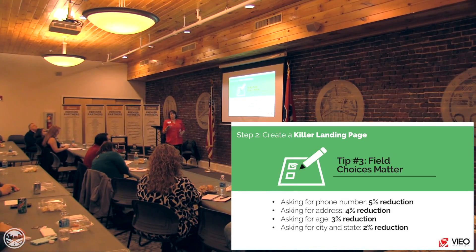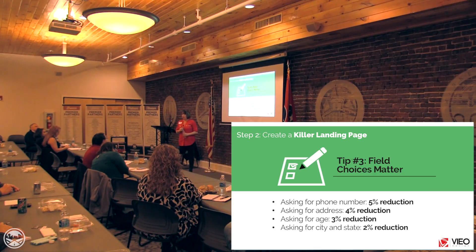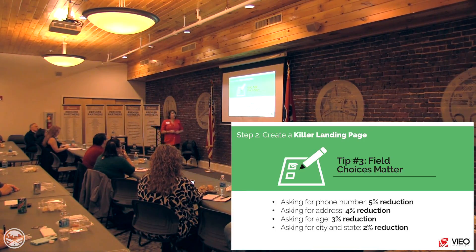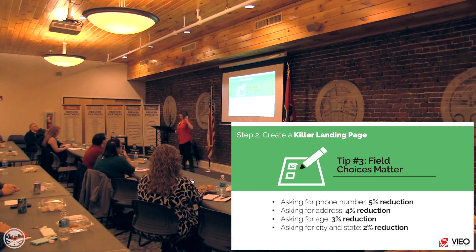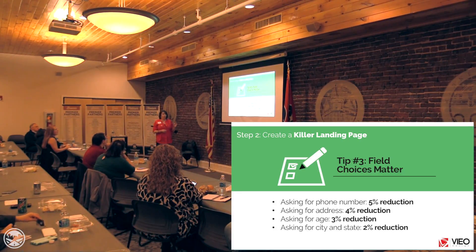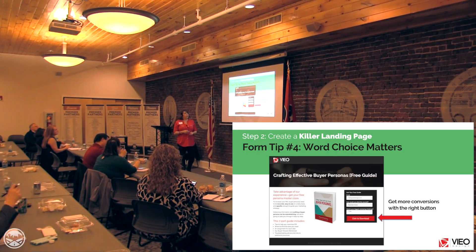Another thing that impacts your form is the field choices. The big one that reduces submissions is asking for a phone number — very few of us want to get phone calls today, and people worry about telemarketers. Asking for address causes a 4% reduction. Asking for age also reduces submissions. Asking for state is not as big a deal. Unless you need the address, just ask for the minimum.